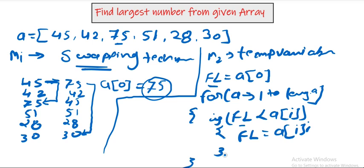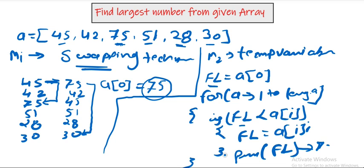FL starts as 45 at index 0. Comparing with index 1: 45 is greater than 42, so the if condition is false. At index 2, the condition is true — 45 is less than 75 — so FL becomes 75. Then 75 is compared with 51, 28, and 30, all false. Once the for loop is done, we print FL, which is 75.